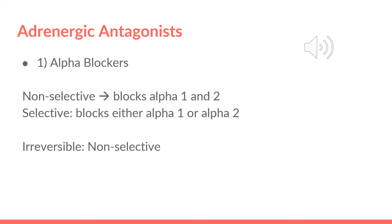Now we're going to be talking about the alpha blockers. They can be non-selective, which means that they can block alpha-1 and alpha-2. And they can be selective, which means that they can block either alpha-1 or alpha-2. So if they block alpha-1, they are alpha-1 blockers or antagonists. And if they block alpha-2, they are alpha-2 blockers or antagonists. We also have the irreversible, which are non-selective.